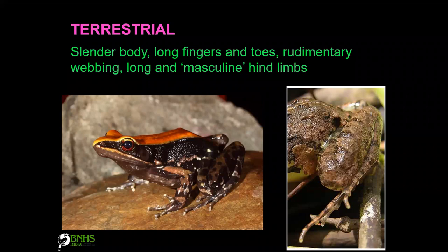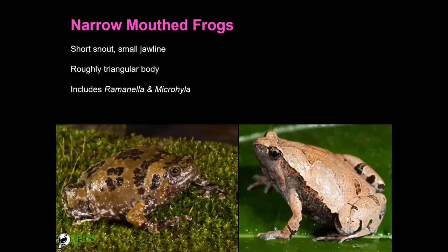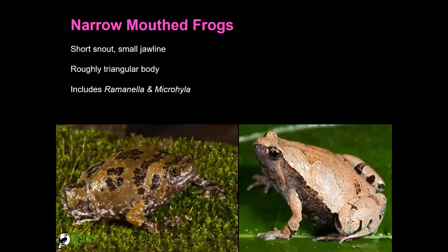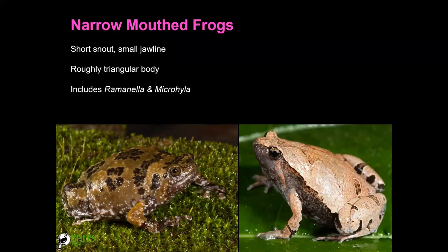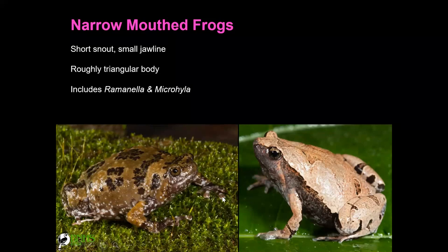Narrow-mouthed frogs are mostly found in grassland areas — they are very short and stout with a pointed snout, a very small jawline, and a triangular shape. The group includes Ramanella and Microhyla — there are about five species inhabiting grasslands or tree holes. In Ramanella, the digits are dilated so they can cling to trees, whereas in Microhyla the digits are not that dilated.